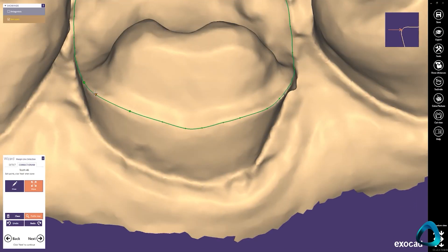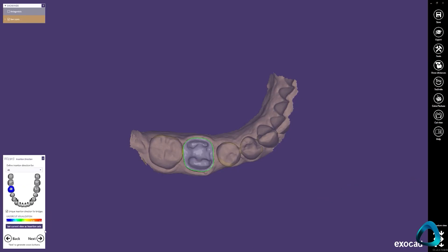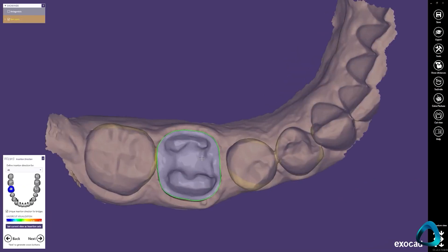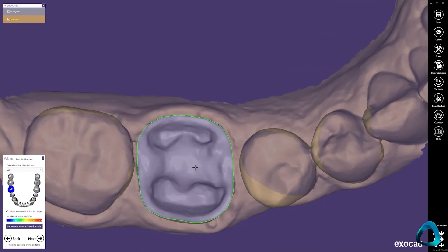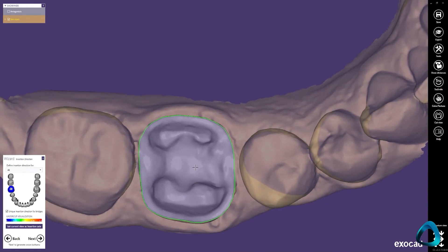The next step is insertion direction. In this part of the workflow, we will tell the software where the insertion direction of the restoration is. For a single crown, this is very simple and most of the time you simply set it at the occlusal point of view. What you want to keep an eye out for is ensuring that the adjacent teeth do not obscure the margin line from your selected path of insertion, and you also want to try and minimize or avoid undercuts as much as possible at the same time.